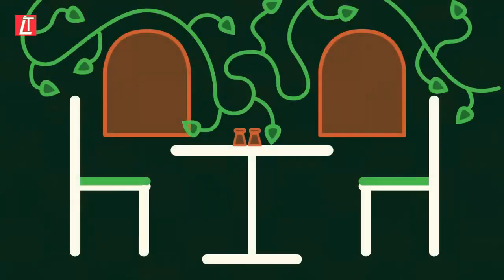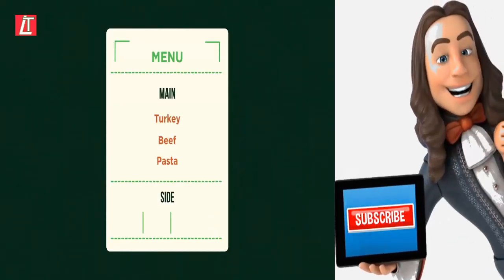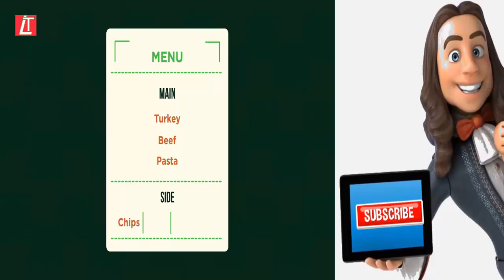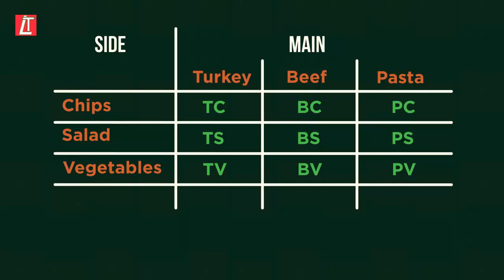Now imagine yourself at a restaurant where you have the choice of turkey, beef or pasta for main, with the option of chips, salad or vegetables on the side. We can list the outcomes for this as there are only 9. But we can also present them in a table like this. This form of sample space diagram is very useful, especially if you have to answer probability questions based on two events.